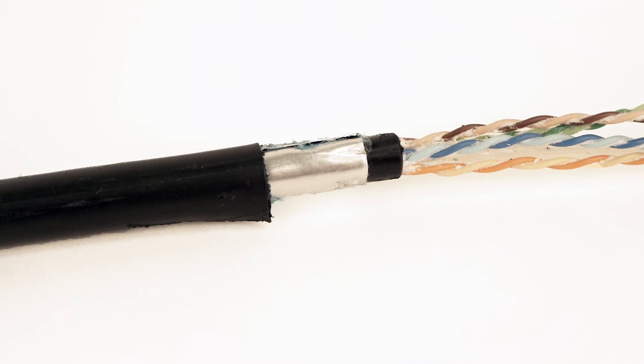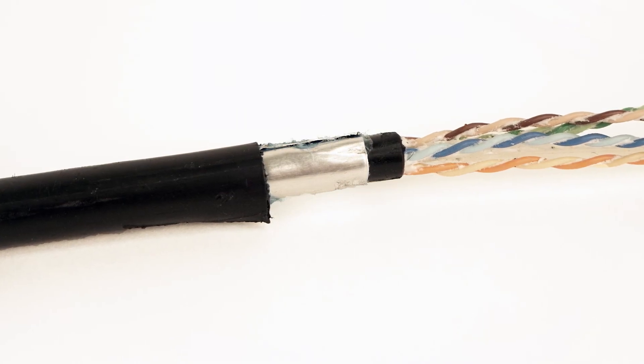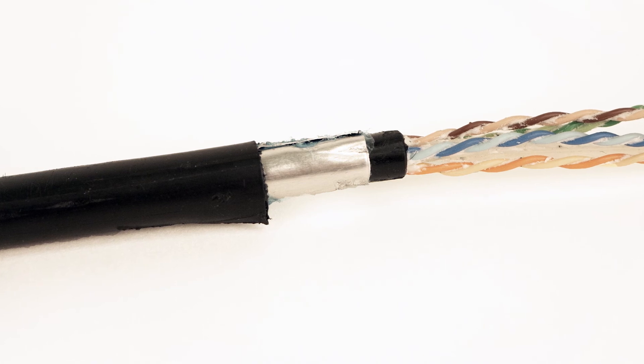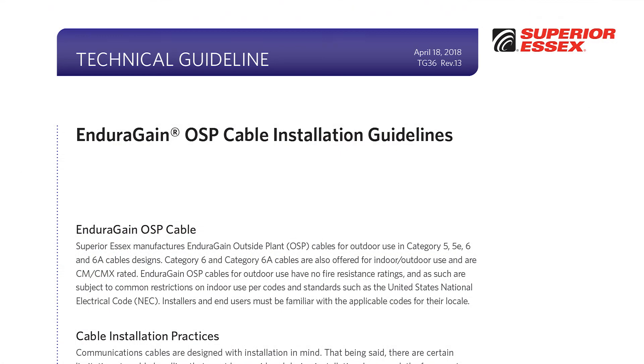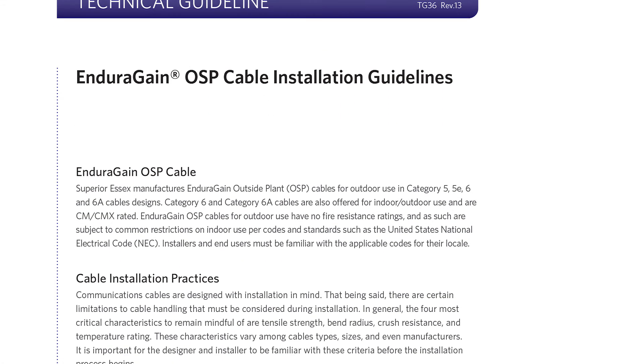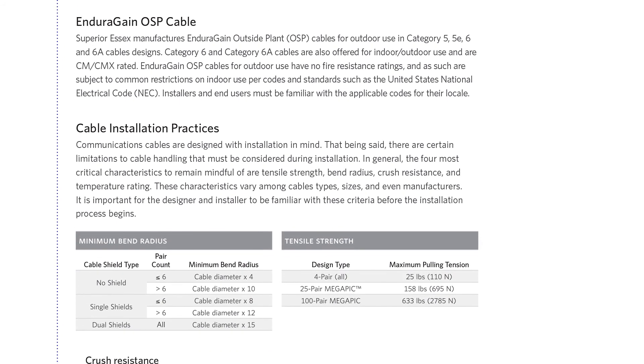It is important to note that the coating must be scraped from the shield to ensure a good ground if the hardware does not effectively penetrate the coating. Please see our Endura-Gain OSP cable installation guideline for additional details about this method.